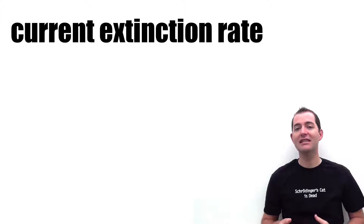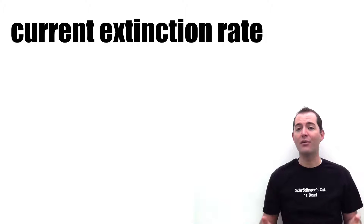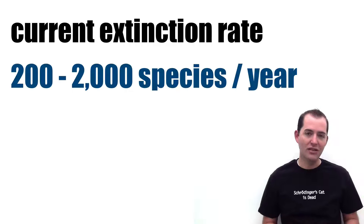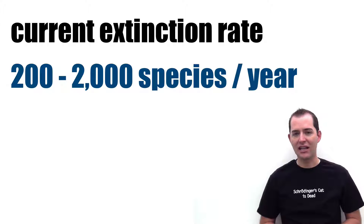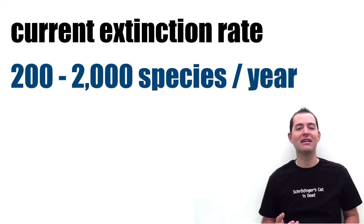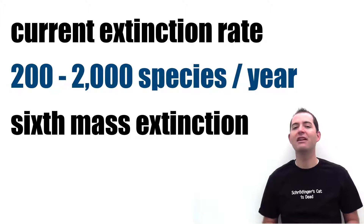If we compare this to the estimated current rate of extinction, we see that the current rate is much, much higher than the historical — even 1,000 to 10,000 times higher. Estimates of the current extinction rate place it at 200 to 2,000 species per year, or in some cases even dozens of species each day. Our current extinction rate has led to now being known as the sixth mass extinction, which is the greatest die-off of species since the dinosaurs died off 65 million years ago.